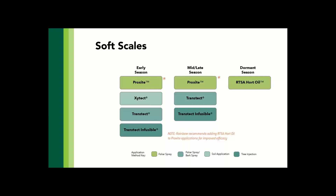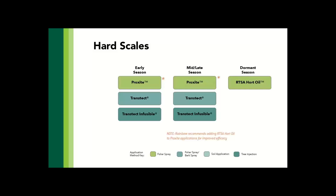For soft scales like lecanium scale, Zytec can be a great option for managing and keeping populations in check, applied early in the spring. As we move into other options, you may be looking at Transtec bark spray or infusable as options, in addition to a crawler stage spray with Proxite. Looking at armored or hard scales, your options are more limited — there's no option for Zytec. However, Transtec shows very nice effectiveness on many armored scales, along with horticultural oil for your dormant spray and Proxite for crawler stage spray.